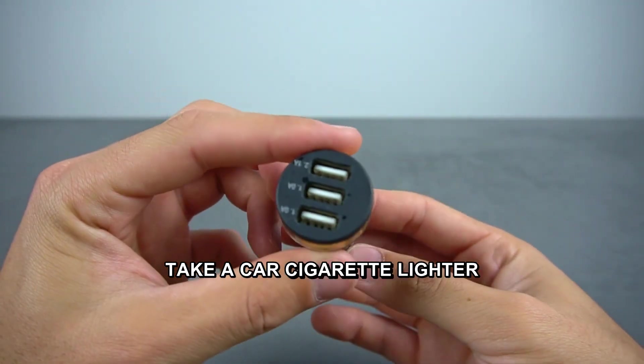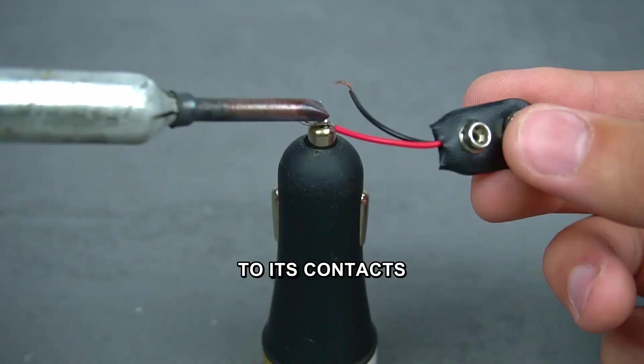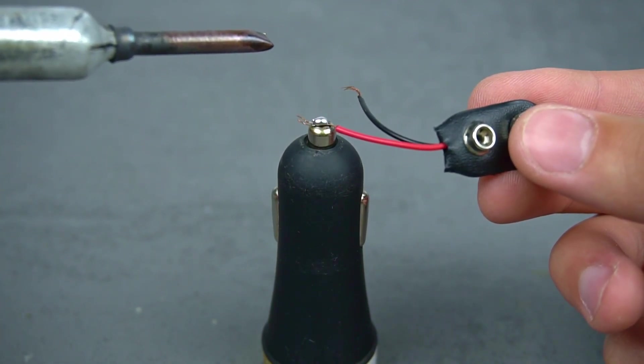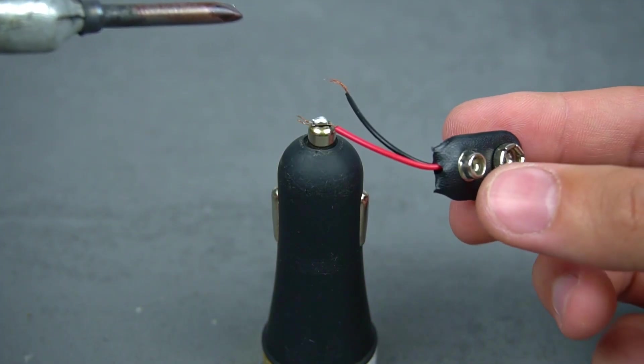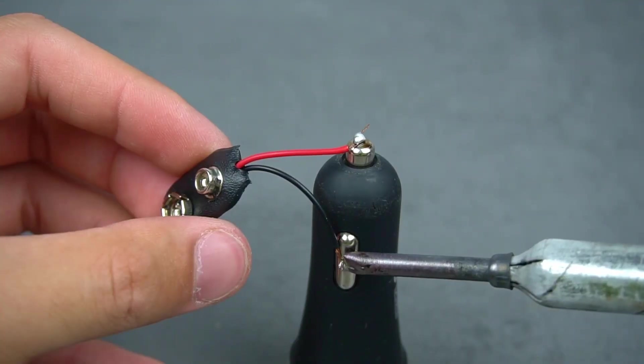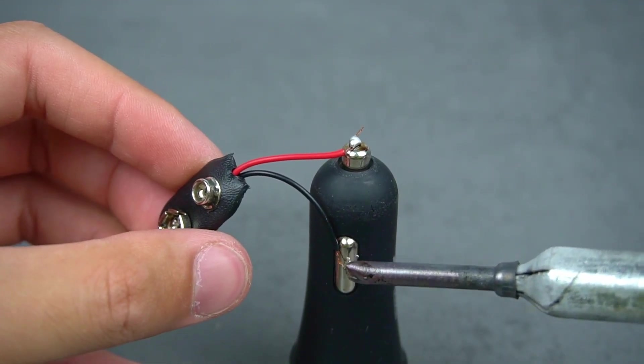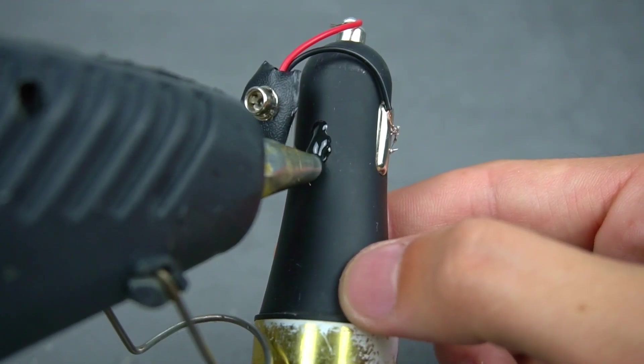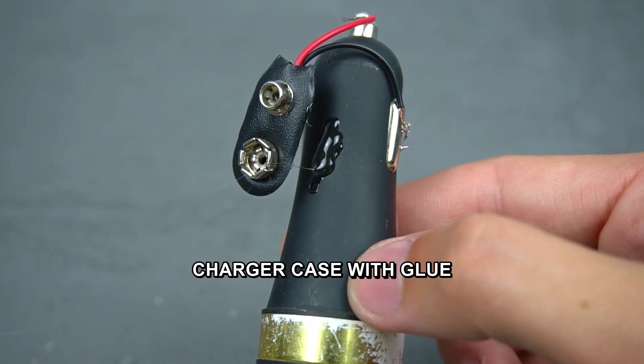Take a car cigarette lighter charger and solder a 9V battery connector to its contacts. Secure the connector to the charger case with glue.